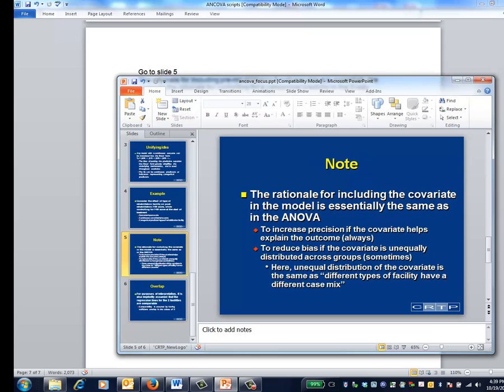The rationale for including pre-rehabilitation functional status is essentially the same as the rationale for controlling for a categorical predictor in the two-way analysis of variance. In particular, if the covariate is strongly associated with the outcome, which is the case for function pre-rehabilitation, controlling for it increases the precision of the accompanying analysis.